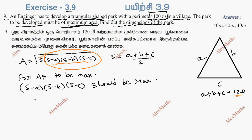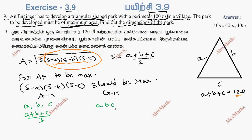Now we have the terms arithmetic mean and geometric mean. Let's take a look: the 3 terms are a, b, c. The arithmetic mean is a plus b plus c divided by 3, and the geometric mean is (a·b·c) to the power of 1 by 3. If we have 3 terms, this applies.